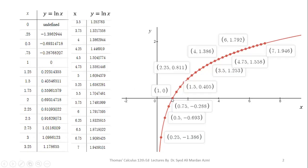At the point (1, 0), when x equals 1, y equals 0 because natural log of 1 is 0 — remember this: natural log of 1 is 0. When we plot all these points on the coordinate plane and join them, we get the graph of y is equal to natural log of x.